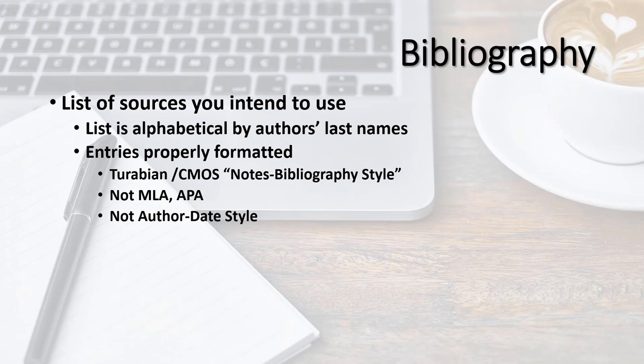Though Turabian Chicago allows for author-date style, do not use it in history class. Other lectures deal with the details of citations, but be aware that you must cite your sources in an alphabetical list at the end of the proposal, formatted according to Turabian's notes-bibliography style.